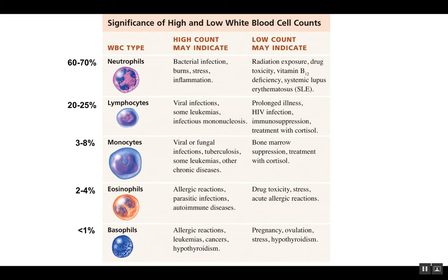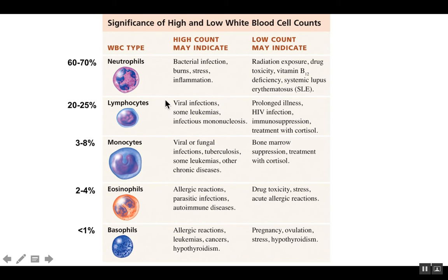When it comes to neutrophils, a high count most often means there's a bacterial infection. For lymphocytes, many — especially the T-lymphocytes — are involved in destroying virally infected cells. So if you have a virus, your body is going to upregulate T-cells, and individuals with viral infections often have a high lymphocyte count. One exception is HIV, which actually infects lymphocytes and destroys them, rendering your immune system very weak. In that case, you might have low lymphocyte numbers.